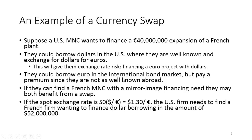They could borrow euros in the international market, but they might pay a premium because they're not as well known. If they can find a French multinational corporation with mirror image financing needs, they may both benefit from a swap. They find a French company that wants to borrow essentially the same amount but in US dollars. The spot exchange rate is $1.30 per euro, so the US firm needs a French firm wanting to finance $52 million — that's 40 million euros at the $1.30 rate.